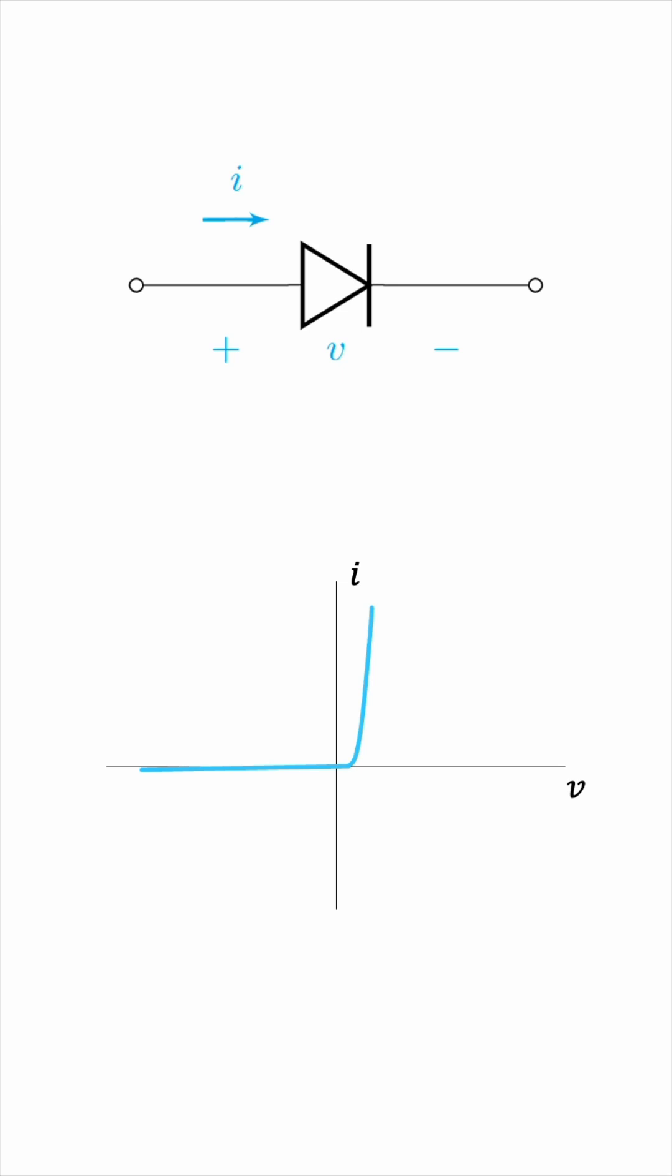From the graph, we can see that the diode is a non-linear device. In other words, it does not obey Ohm's law, like a resistor does.